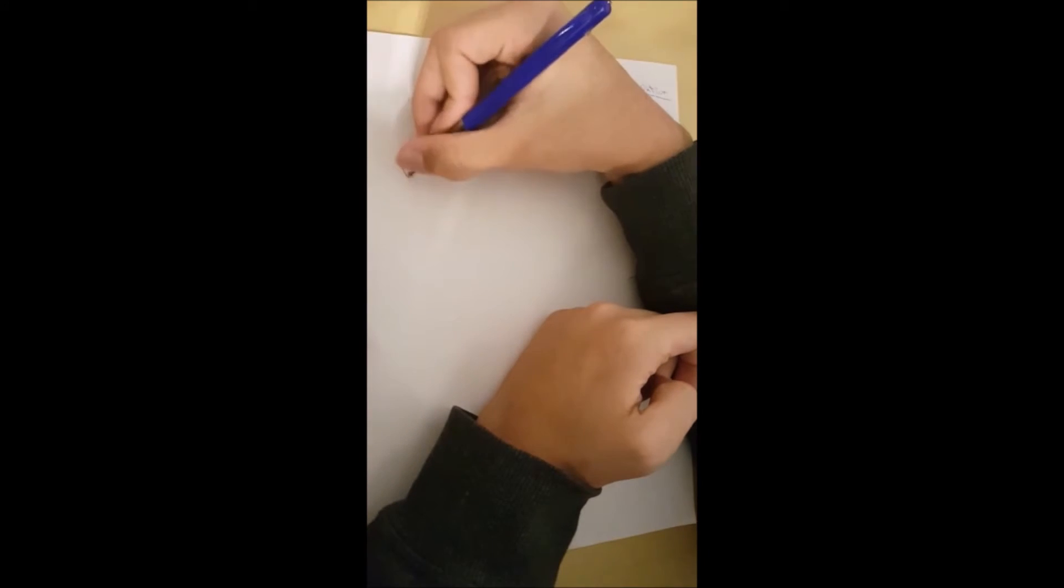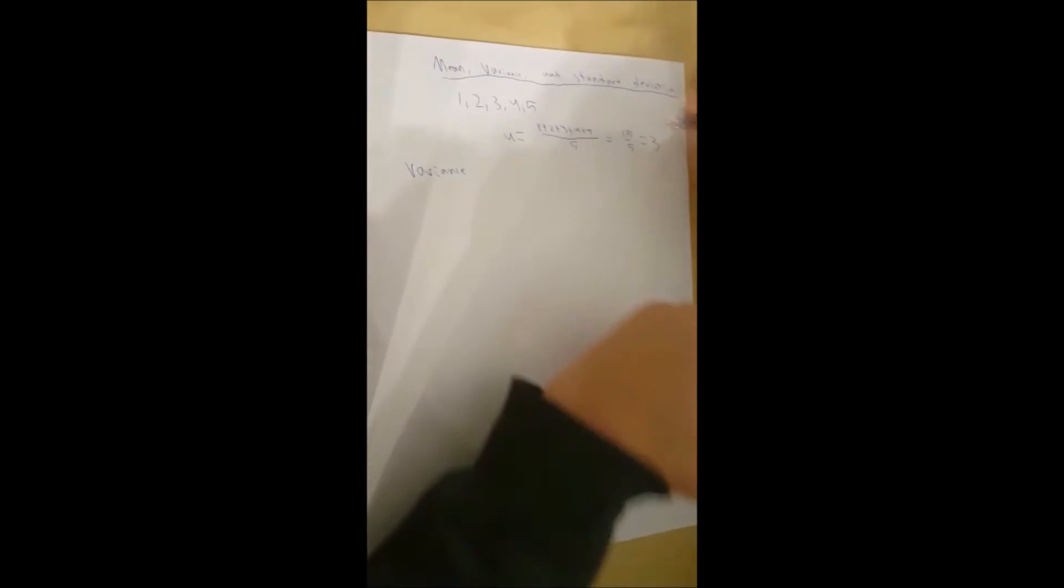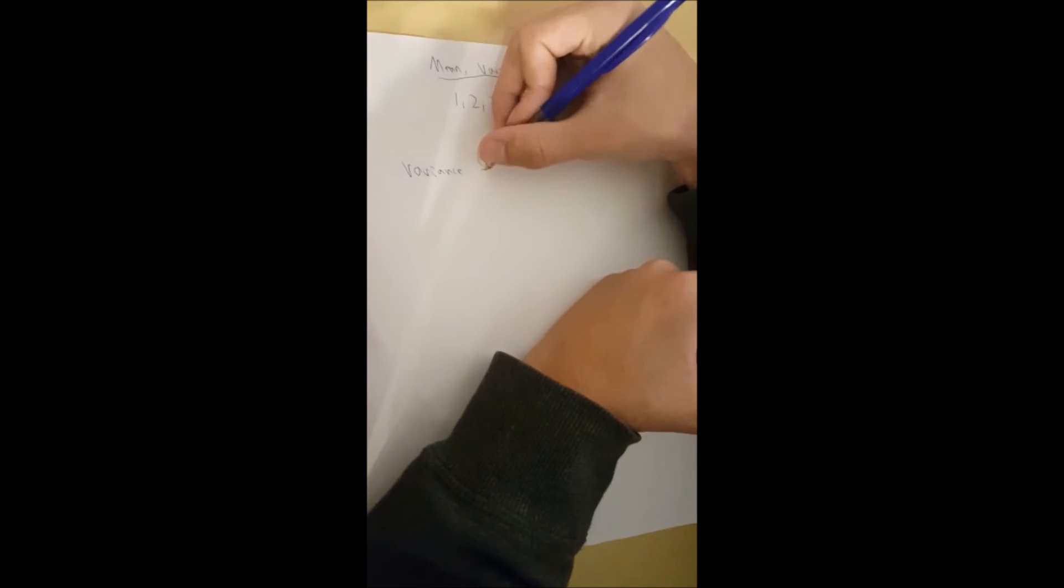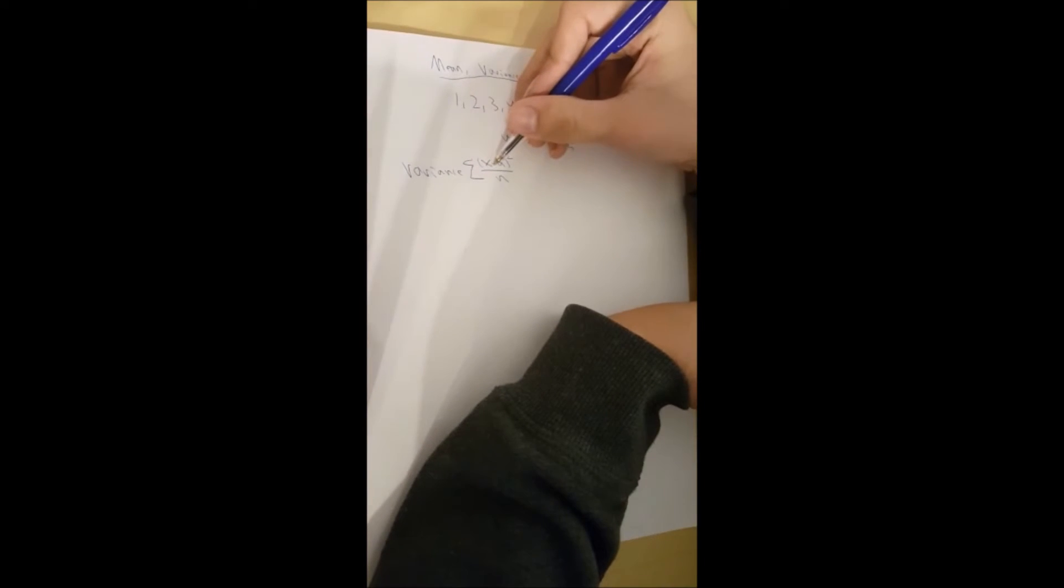And the variance, there's actually two different formulas for that. One of them, you take a value minus the mean, you square it, divide it by n, and then you take the sum of it. So you take every single x value minus the mean, you square it, and divide it by n.